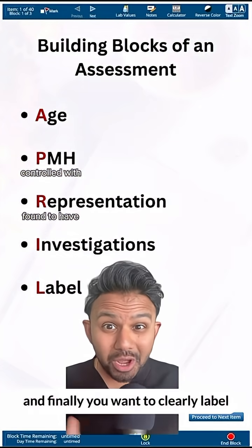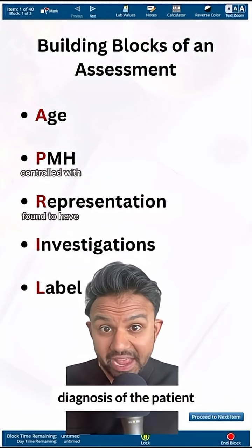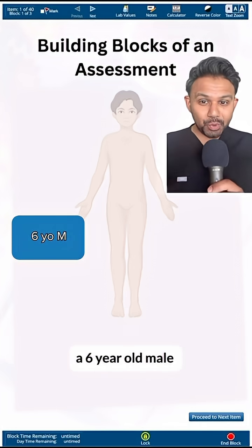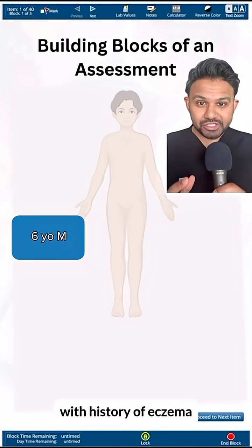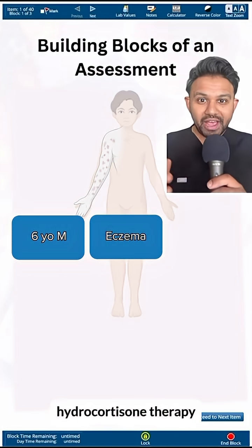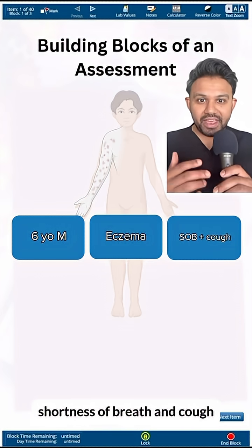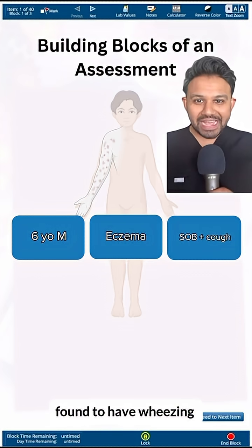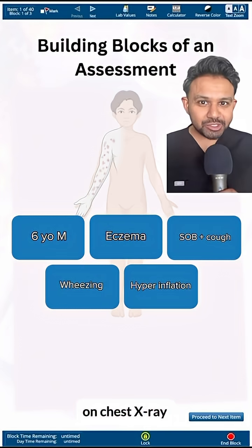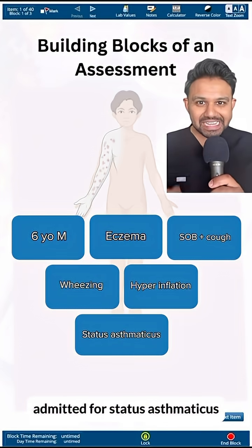Finally, you want to clearly label the admitting or working diagnosis of the patient. Putting it all together: a six-year-old male with history of eczema controlled on hydrocortisone therapy, presenting with shortness of breath and cough, found to have wheezing and hyperinflation on chest x-ray, admitted for status asthmaticus.